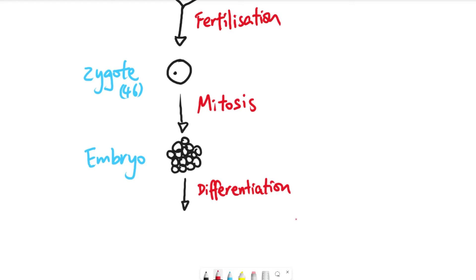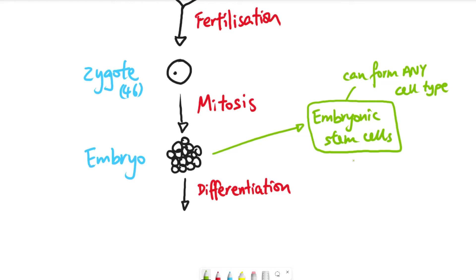Differentiation is the process where a cell becomes specialized or gains specific adaptations to allow it to perform certain functions — for example, becoming a red blood cell, a neuron, or in plants, various plant cell types. Cells in the embryo that are able to differentiate into any type of cell are called stem cells — specifically embryonic stem cells. Embryonic stem cells can form any cell type, which is really important for making a brand new organism. In IVF — in vitro fertilization, where an embryo is made in a lab — embryonic stem cells can be extracted for cloning or potential genetic therapy.